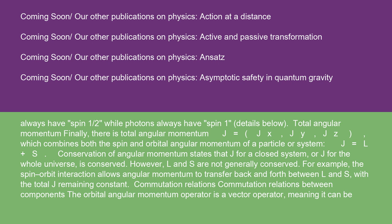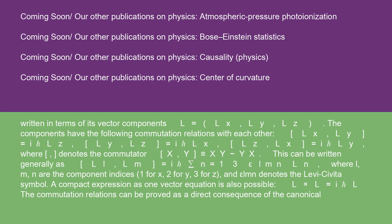Commutation relations between components: the orbital angular momentum operator is a vector operator, L = (Lx, Ly, Lz). The components have the following commutation relations with each other: [Lx, Ly] = iℏLz, [Ly, Lz] = iℏLx, [Lz, Lx] = iℏLy, where the bracket denotes the commutator [x, y] ≡ xy − yx.